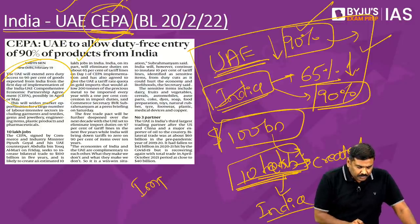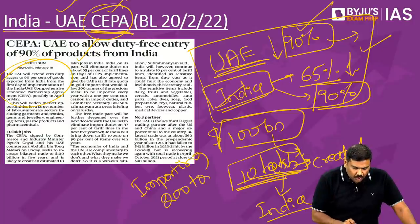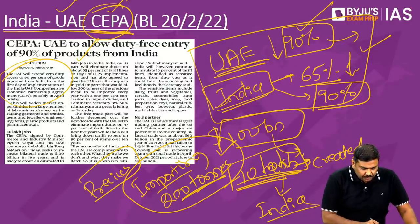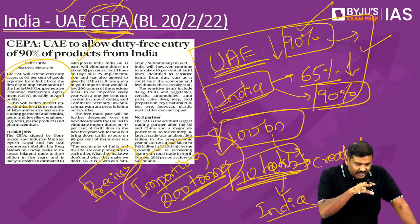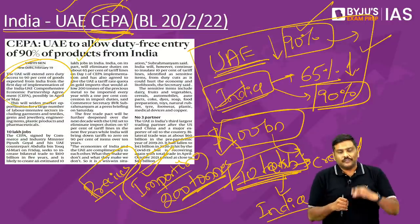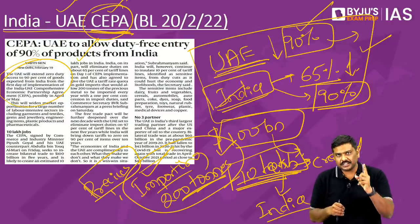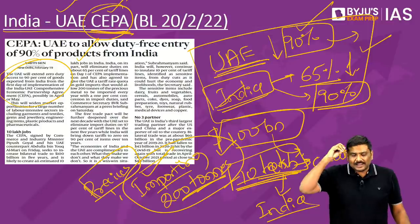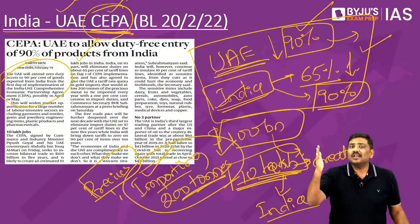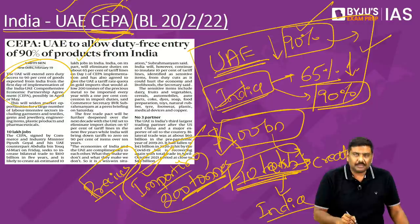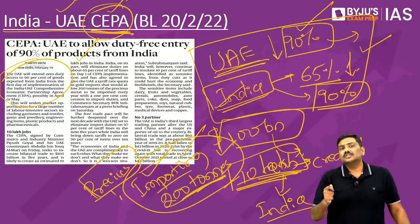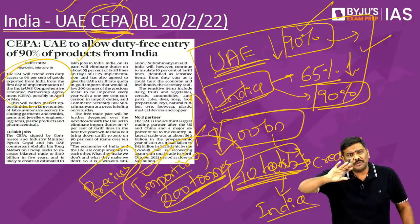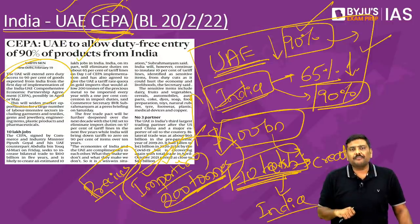Over a period of time, UAE has stated it will reduce or eliminate tariffs on most imports done from India, and in the next 10 years India would be reducing and eliminating tariffs on around 90% of goods imported from UAE. India will be importing 200 tons of gold from UAE — and on imports up to 200 tons, the tariff will be reduced by 1 percentage point.